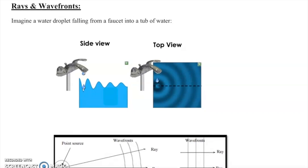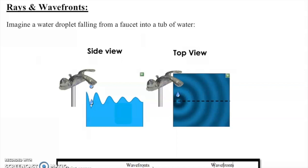I want to start off by returning to concepts we touched on in our previous lecture on rays and wave fronts. Imagine a water droplet falling from a faucet into a tub of water — it sends out ripples. From the side you'd see peaks and troughs, but from the top you'd see rings spreading out in all directions.